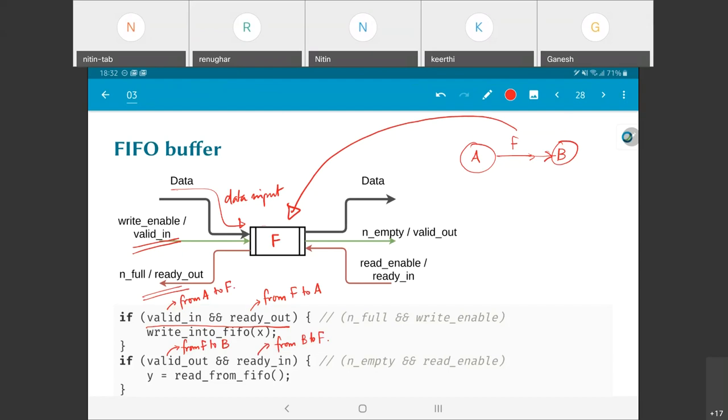So this sort of handshaking, this is essentially something called a handshaking protocol. And this handshaking is what allows us to communicate transparently between A and B through the FIFO F.